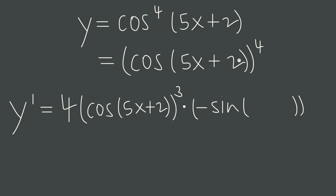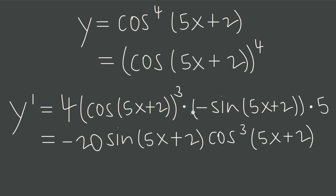We narrow in on cosine of 5x plus 2 and realize we again have an outer and inner function: cosine is the outer, 5x plus 2 is the inner. To differentiate, we take the derivative of cosine — the outer function — which is negative sine, leaving the inside function 5x plus 2 completely untouched. Then we multiply by the derivative of that inside function. The derivative of 5x plus 2 is 5, so we multiply by 5. We know we're done because we've reached the innermost layer — there's no other function inside 5x plus 2 — so this is our last application of chain rule. Simplifying, we bring the negative sign, the 4, and the 5 together to get negative 20 out in front, giving us negative 20 cosine cubed of 5x plus 2 times sine of 5x plus 2.